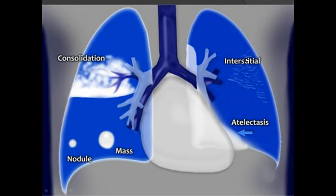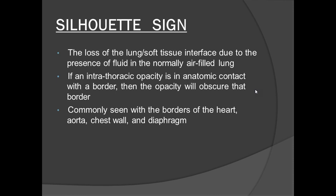Consolidation can appear as a mass or nodule — nodules are smaller than masses. There may be lung collapse labeled as atelectasis, interstitial thickening from pulmonary edema, pulmonary hemorrhage, alveolar proteinosis, or malignancy. The silhouette sign is very important: normally there is contrast between air-filled lung and adjacent soft tissues like the heart and hemidiaphragms; when air is replaced by fluid, pus, or inflammatory exudate, this interface is lost.